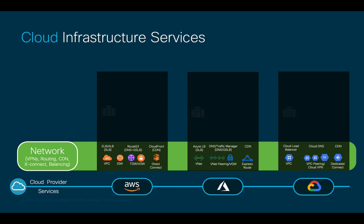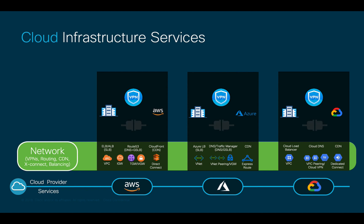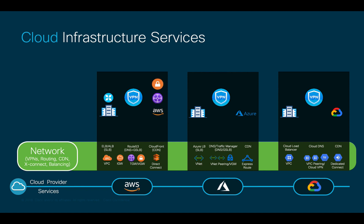Then we will need communication from branch offices or other on-premises data centers to the cloud. We may use VPN connections or even dedicated physical connections. Connecting through VPNs will include different terms such as TGWs and VGWs if using AWS, VPN gateways for Azure, or Cloud VPNs for Google. You can also run a Cisco CSR 1000v instance on the cloud to terminate VPN tunnels if you prefer.